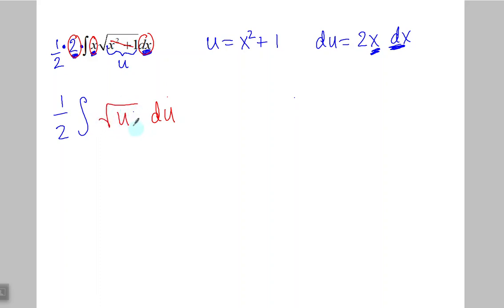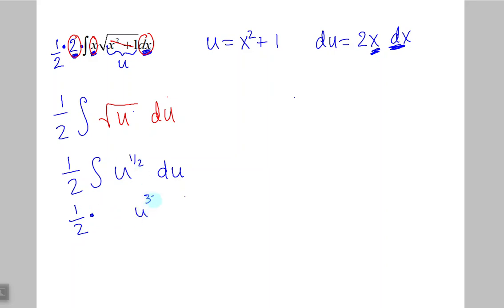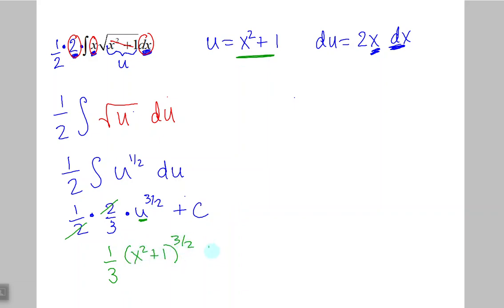Let's make sure we substitute properly: 2x dx is all du, and x squared plus 1 comes out as u, so square root of u. Before taking the antiderivative, it helps to rewrite that in exponent form: 1 half times the integral of u to the 1 half du. Adding 1 to the exponent gives u to the 3 halves, multiplied by the reciprocal 2 thirds, plus C. Simplifying and substituting back: 1 third times x squared plus 1 to the 3 halves, plus C.